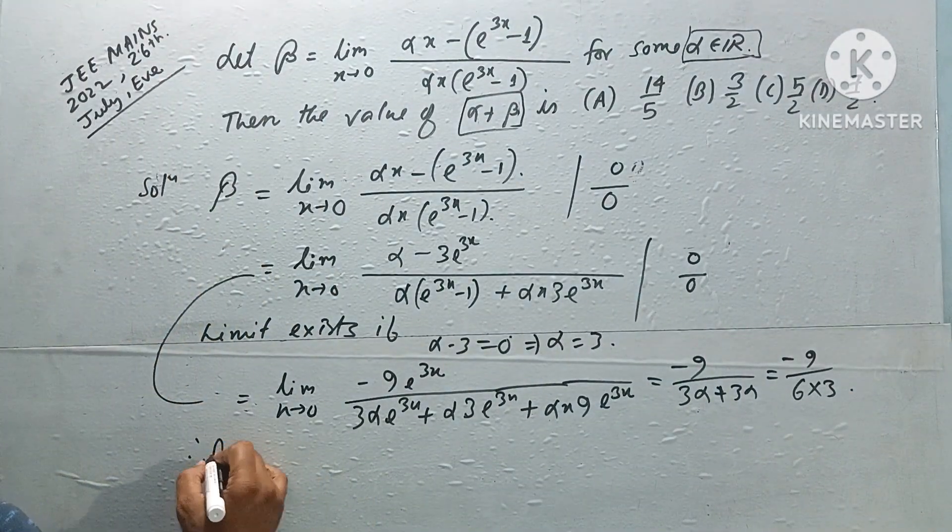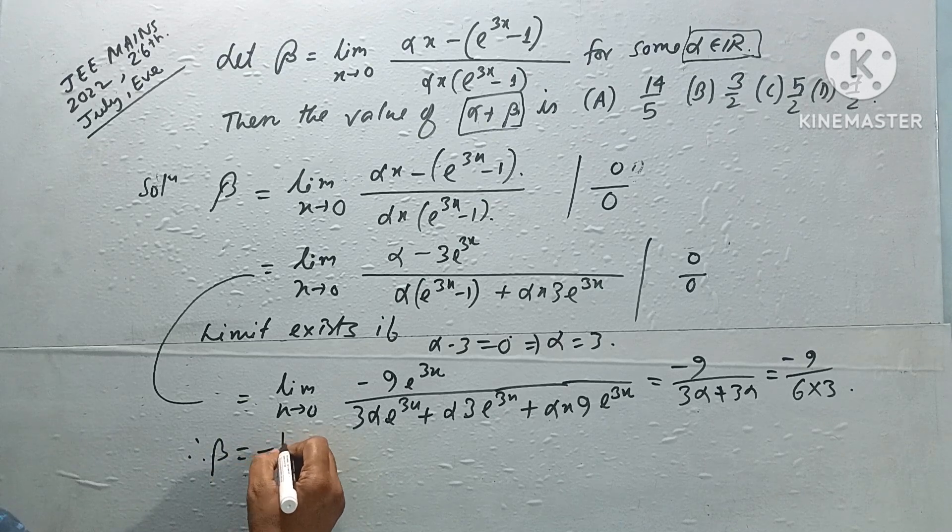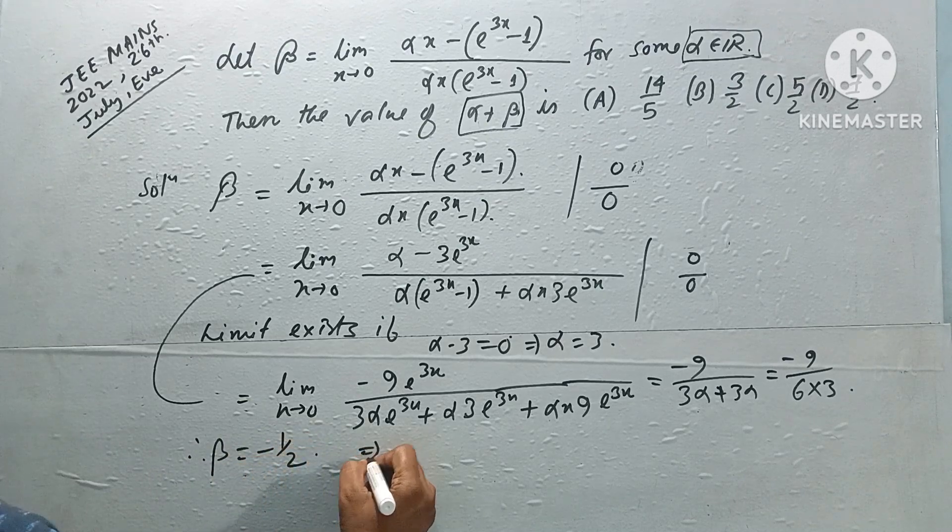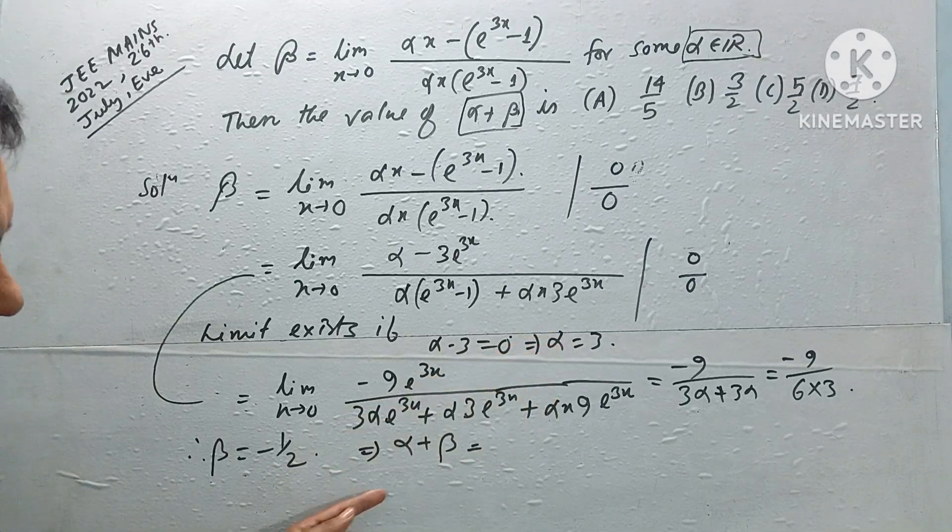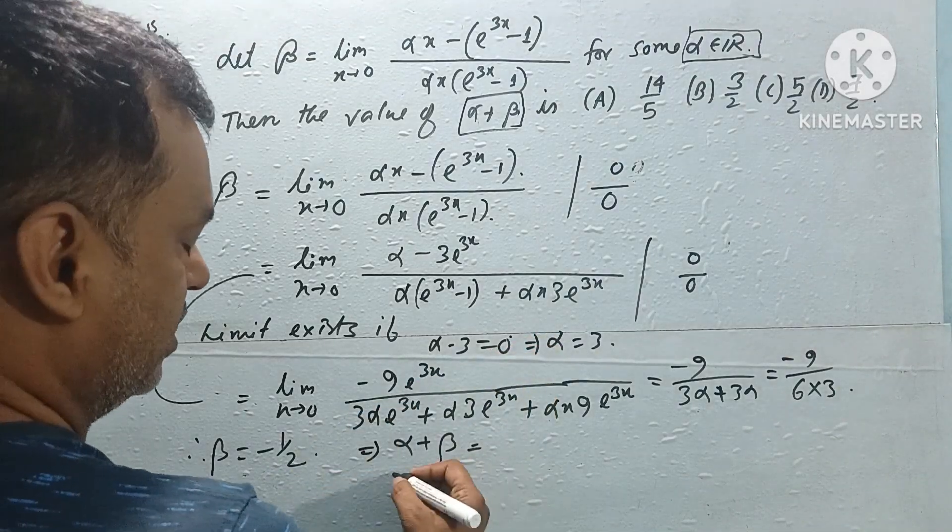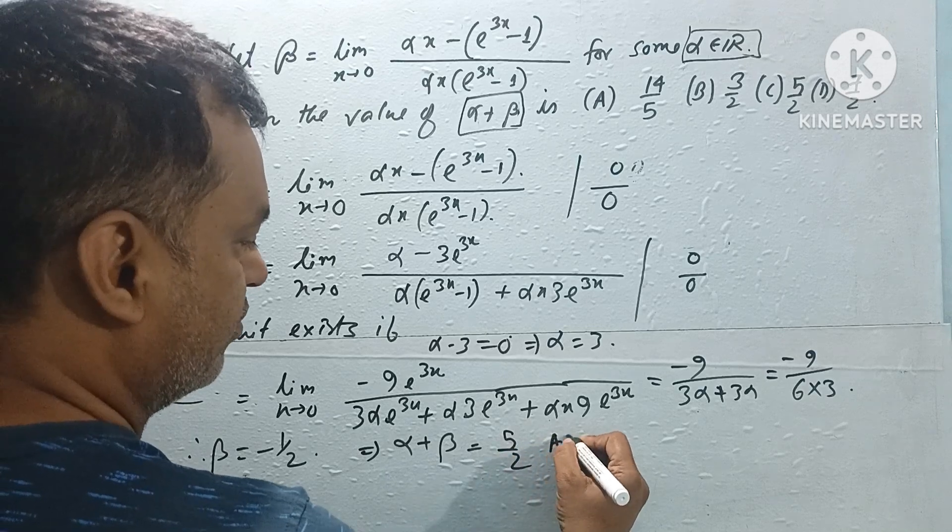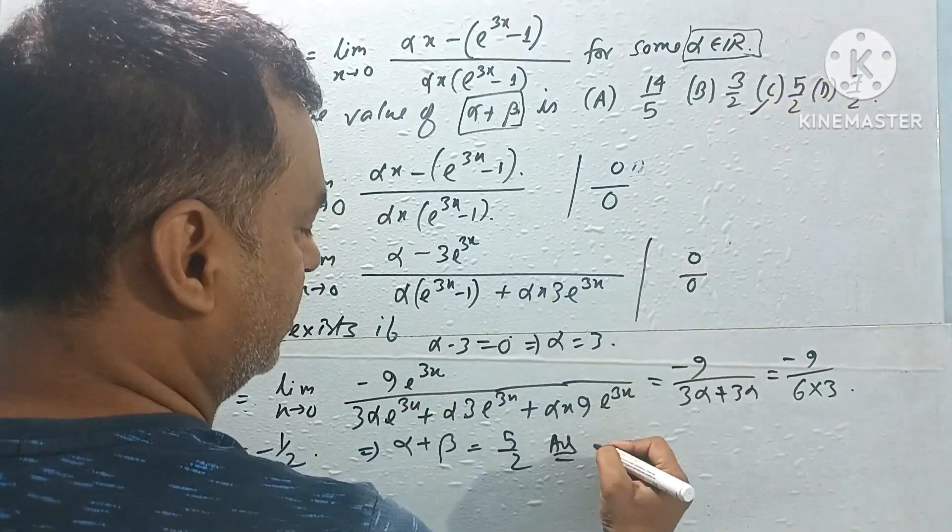Therefore, beta equals minus half. That means alpha plus beta value will be alpha equals 3, beta equals minus half. Alpha plus beta is 5 by 2. Therefore, the answer is 5 by 2, option C.